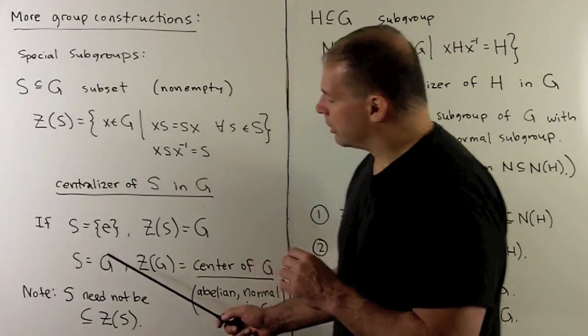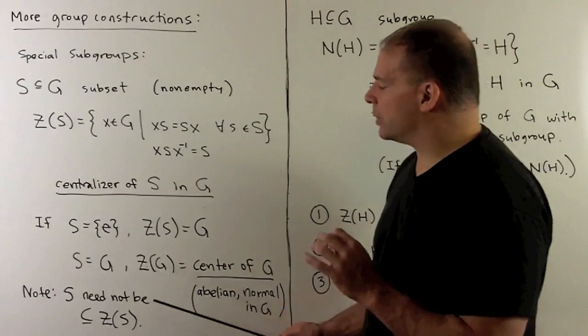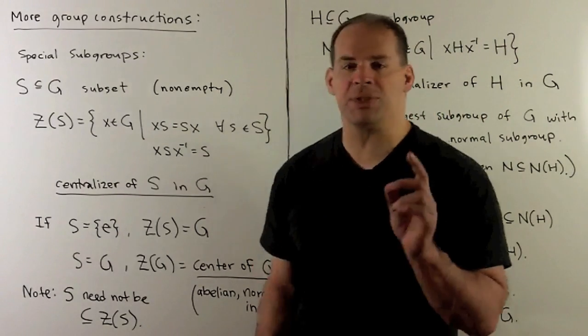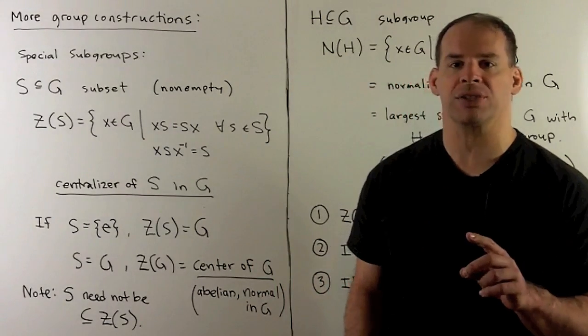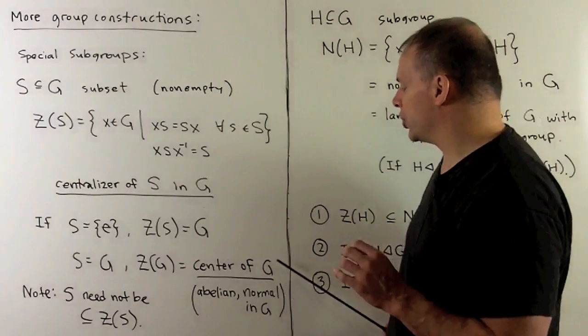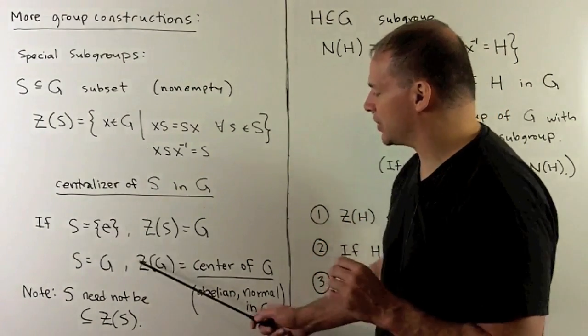Note, by this example, we see that S need not be a subset of the centralizer of S. G is usually not going to be a subset of the center.